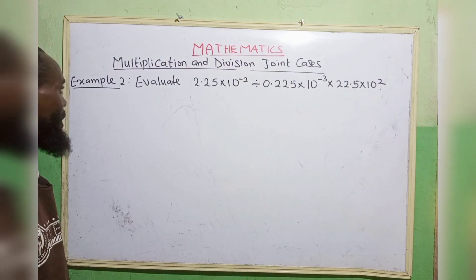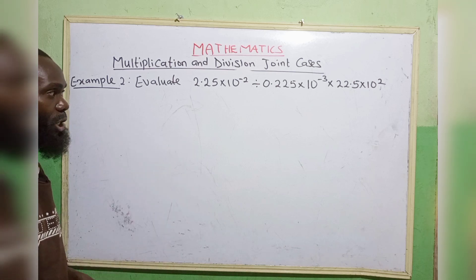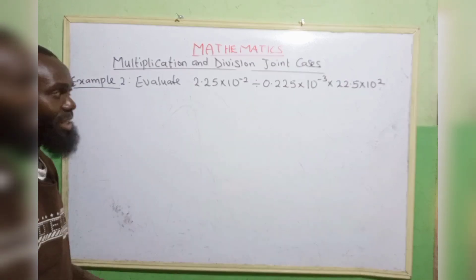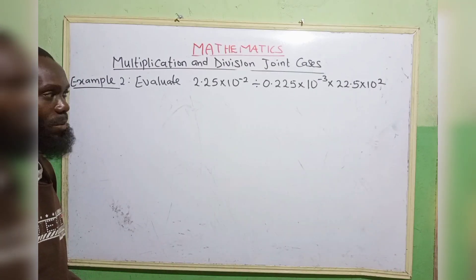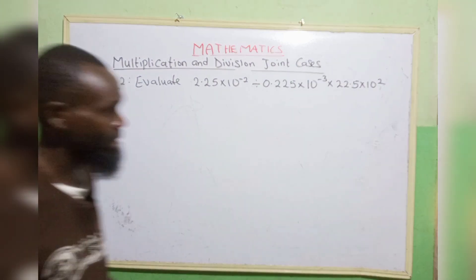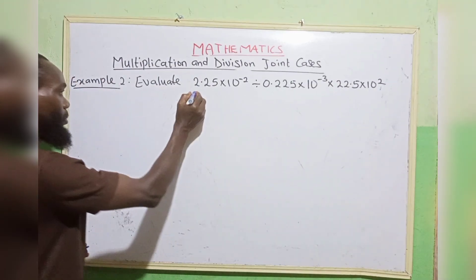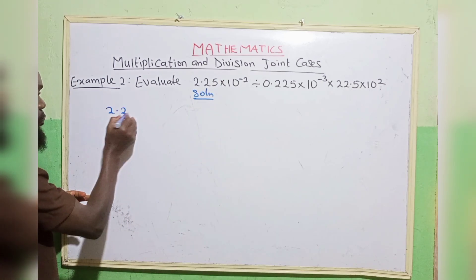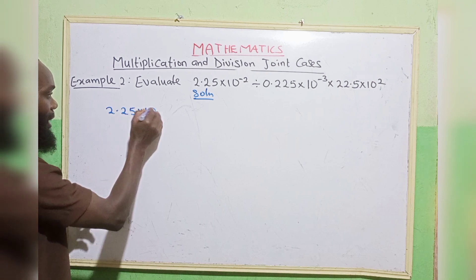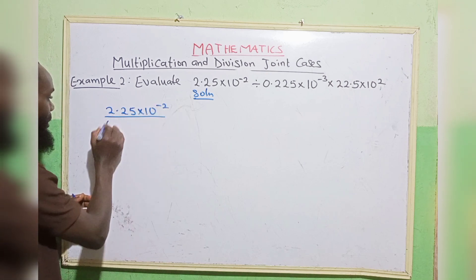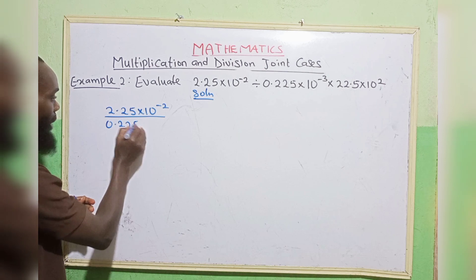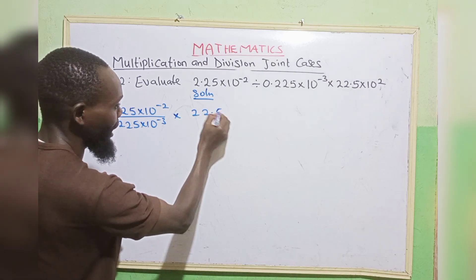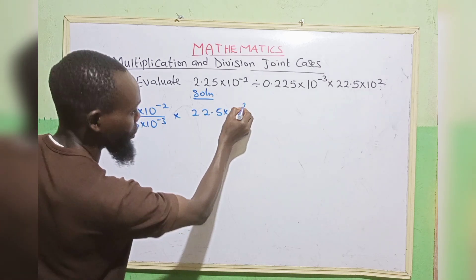Example 2: Evaluate 2.25 times 10 to the power minus 2, divided by 0.225 times 10 to the power minus 3, multiplied by 22.5 times 10 to the power 2. Let us interpret this: 2.25 times 10 to the power minus 2, divided by 0.225 times 10 to the power minus 3, then times 22.5 times 10 to the power 2.